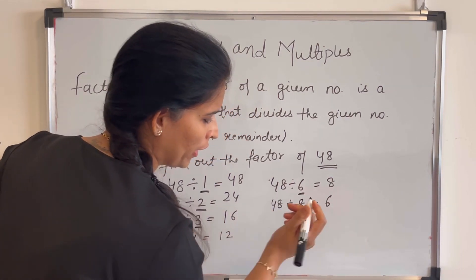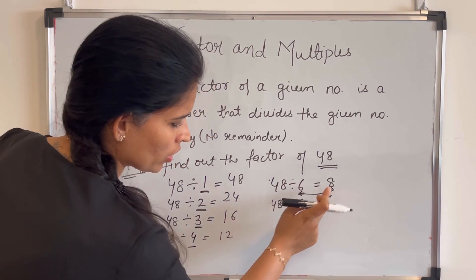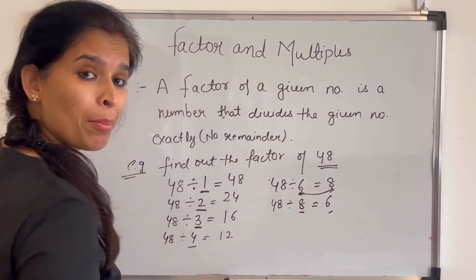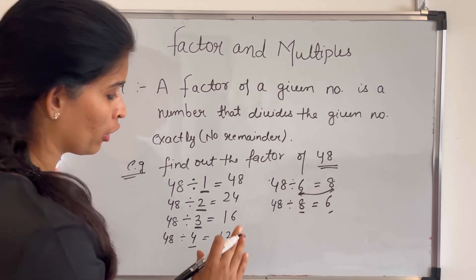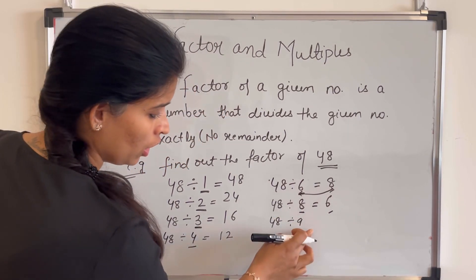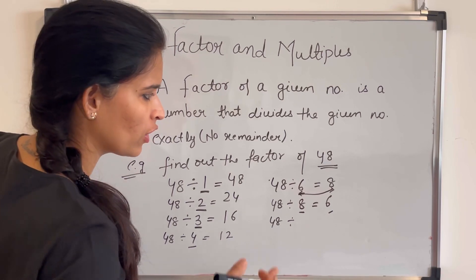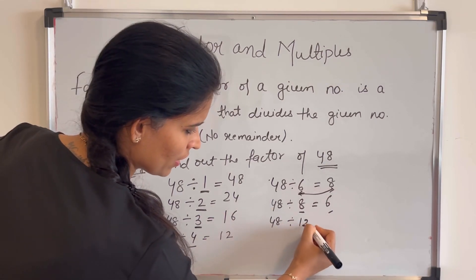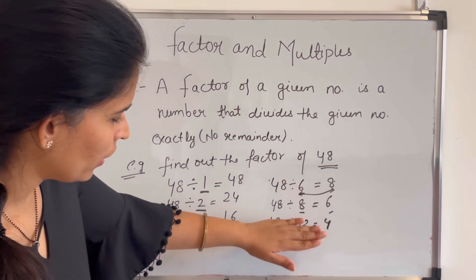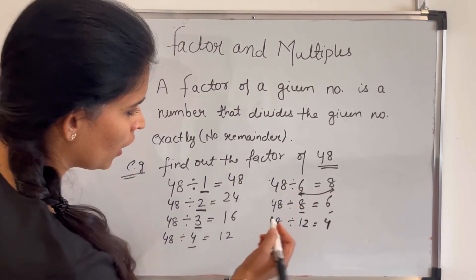We have reached a point where the numbers got interchanged — earlier we had 6 and 8, and now they are swapped. If we check 9, it won't divide 48 completely, so 9 is not a factor of 48. Similarly, 10 and 11 are not factors. What about 12? 12 divides 48, giving 4. So we get the same numbers again — at this point our numbers have interchanged.